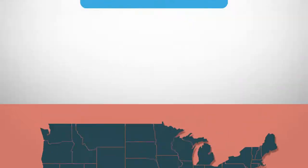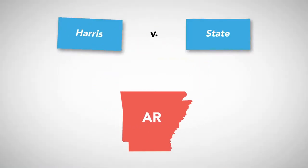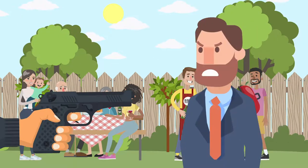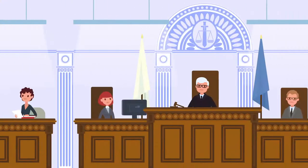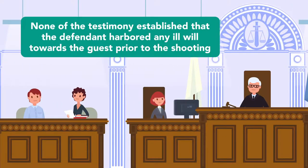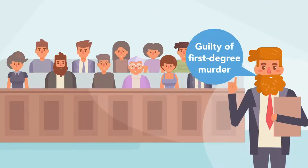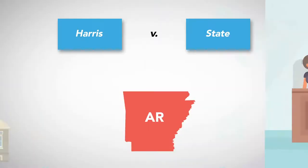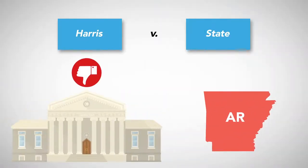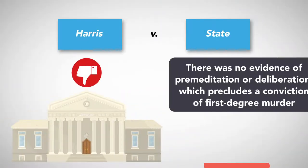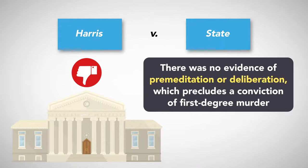In some states, the difference between first degree and second degree murder is whether the defendant pre-planned the murder, often referred to as premeditation. For example, in the Arkansas case Harris v. State, the defendant shot the victim during an argument at a party. Multiple witnesses testified, but none of the testimony established that the defendant harbored any ill will towards the guest prior to the shooting. A jury convicted the defendant of first degree murder, but the Supreme Court of Arkansas reversed the conviction because there was no evidence of premeditation or deliberation, which precludes a conviction of first degree murder.